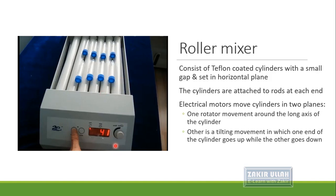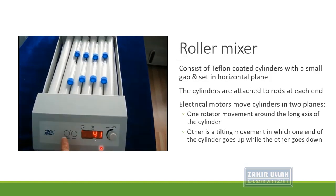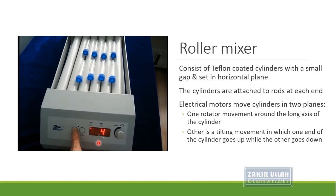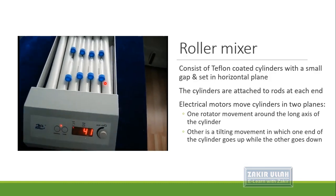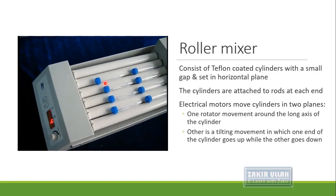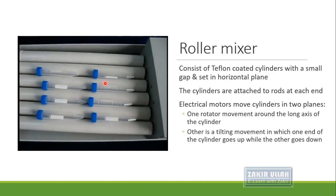The roller mixer has a display bar, a regulator, and increase/decrease buttons. The cylinders coated with Teflon are visible on the unit. A timer and rotation speed (RPM) are set inside the display bar and connected to the motor. First we set the time for how long the tubes are to be rotated and mixed. The cylinders show two types of motion: rotation and tilting.